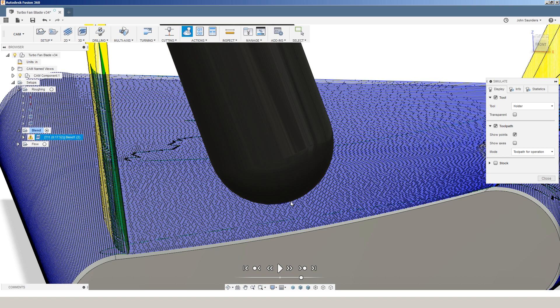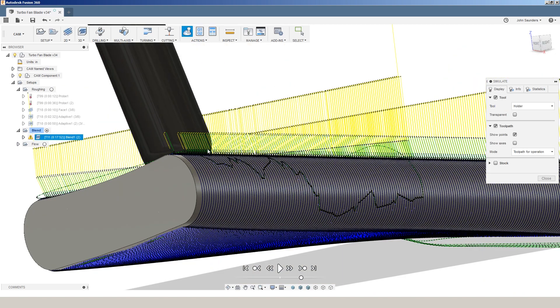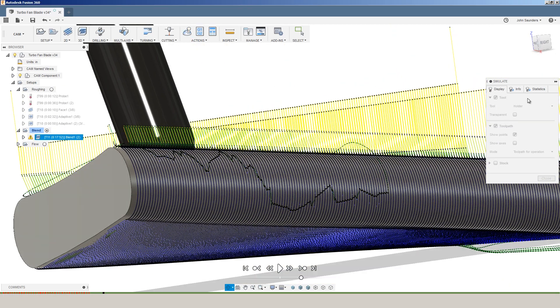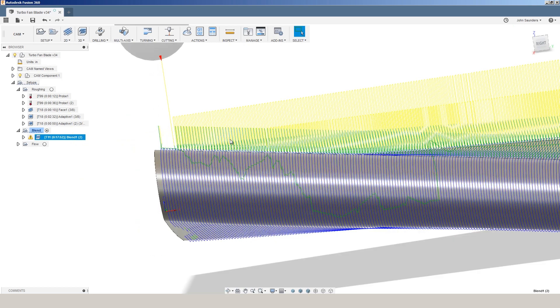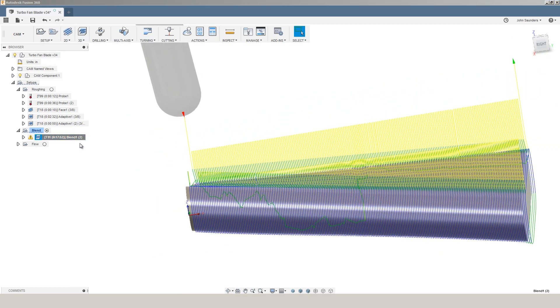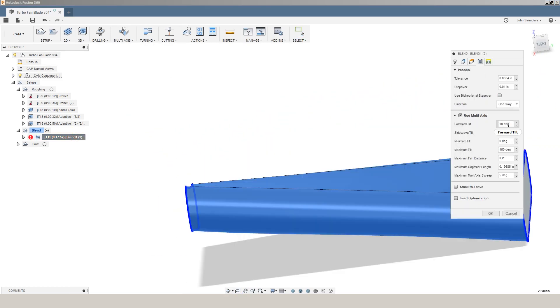But the reason we want to use multi-axis is so that we can tip the tool forward and to its side. That way, we avoid cutting with the tip of the tool and instead are cutting with a much better area of the tool, better surface finishes, better ability to create that chip and evacuate it. Now, I suspect we'd be a little bit better off if we tipped it over even more. But in this video, we went forward and sideways by 10 degrees.